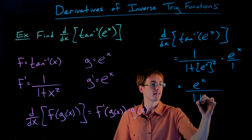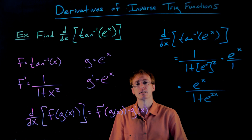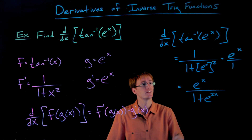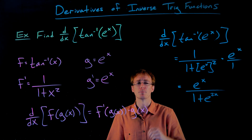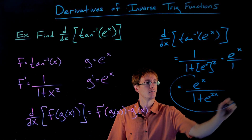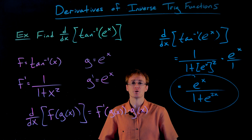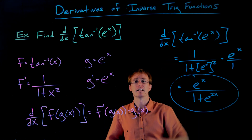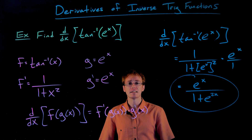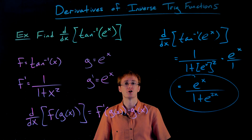We can rewrite that denominator using properties of exponents: e to the x, that quantity squared, is the same as e to the 2x — this is the situation where we multiply the exponents together. So using the chain rule, we were quickly able to find the derivative of this complicated function. The derivative of tangent inverse of e to the x is e to the x over 1 plus e to the 2x.